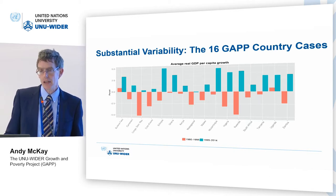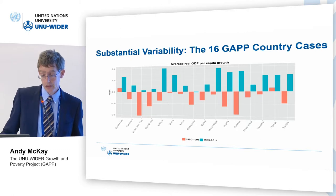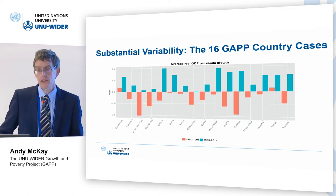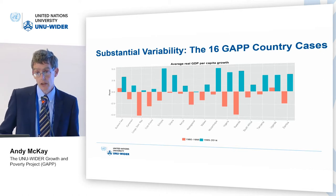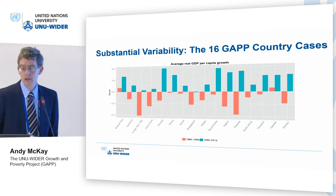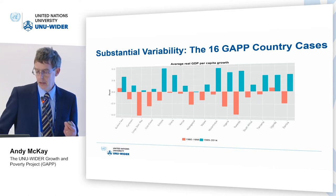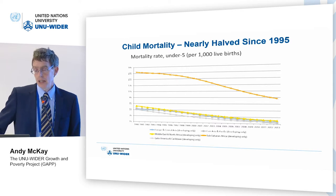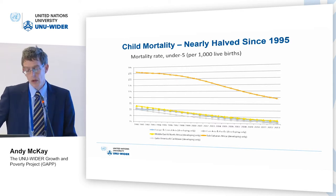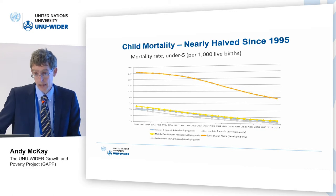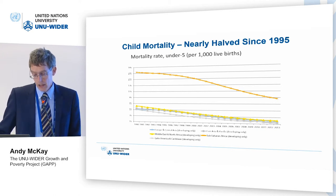What you have is quite a variability of growth experience — they are not all growing fast. Some are growing fast: there are Ethiopias, there are Mozambiques, there are Nigerias — but there are a lot of cases that are not growing fast. So the first message of the book is the variability of the growth experience. Child mortality as an indicator has almost halved since 1995. The top line is sub-Saharan Africa.